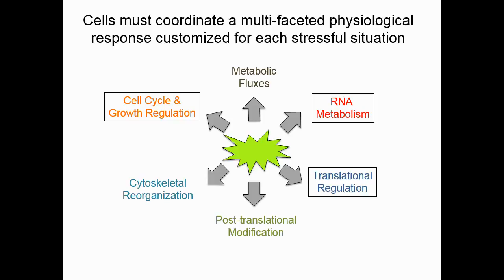Proper stress response is important for cells to adapt to environmental stress, and it requires coordination of a broad set of physiological changes, including transcriptome change, translation regulation, and cell cycle regulation. But how cells coordinate those different kinds of physiological change is still unclear.